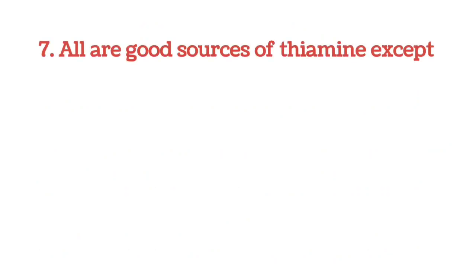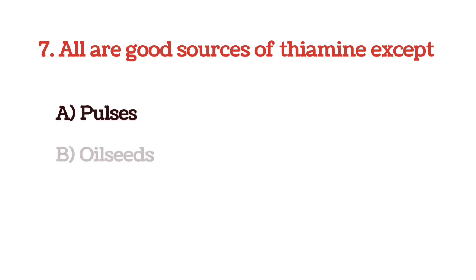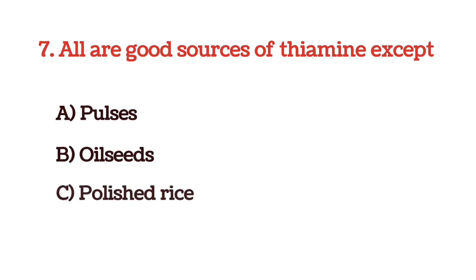Next question: all are good sources of thiamine except — options are pulses, oilseeds, polished rice, and yeast. The correct answer is option C, polished rice.